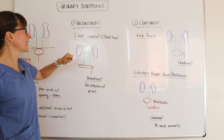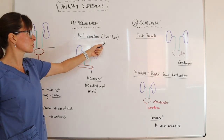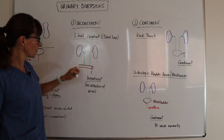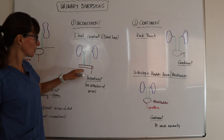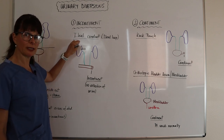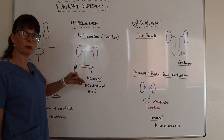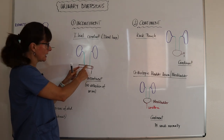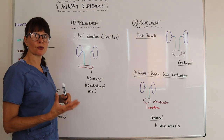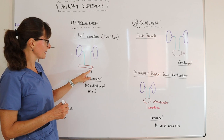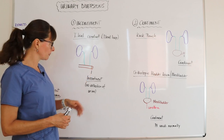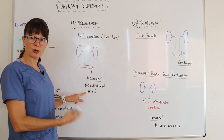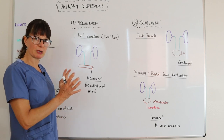For incontinent urinary diversions, we have an ileal conduit, also called an ileal loop. A conduit basically means a channel. Here we have the kidneys and the ureter, and because the bladder is gone, a part of the ileum — that's why it's called an ileal conduit — has been removed from its normal anatomical position and installed at the end of the ureters so that the urine can drain into this conduit. It's only a channel, not an actual reservoir to hold the urine, which means the stoma at the abdominal wall is incontinent. The patient will need a device to collect the urine because it is continuously draining.